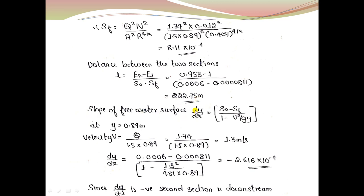The slope of free water surface dy/dx = (S0 - SF)/(1 - V²/GY). At the mean section (y = 0.89 m, V = 1.3 m/s), substituting all values gives dy/dx = -2.616 × 10⁻⁴. Since dy/dx is negative, the second section is located downstream.